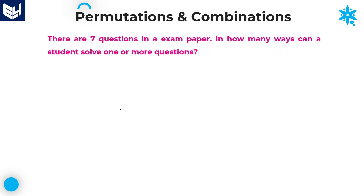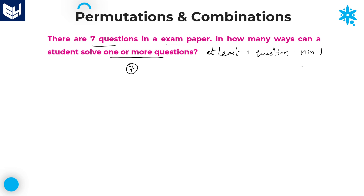Let's move on to the next question. There are 7 questions in an exam paper. In how many ways can a student solve one or more questions? Total 7 questions are there. One or more questions means at least one question, which indicates that minimum one and maximum seven questions he can attempt. If he solves only one question out of seven, that is 7C1. Selecting one question out of seven, that is 7C1.